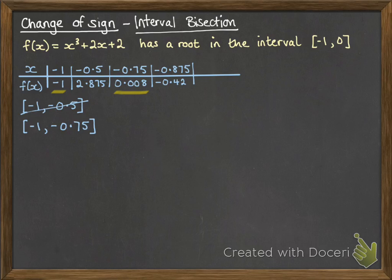Next we'll go halfway between those two. So that's -0.875. That gives us a negative answer. So that gives us a bottom limit. So now our interval lies between -0.875 and -0.75.